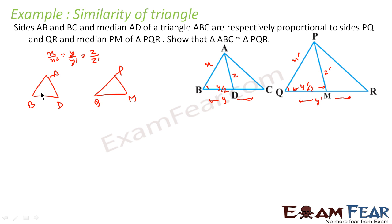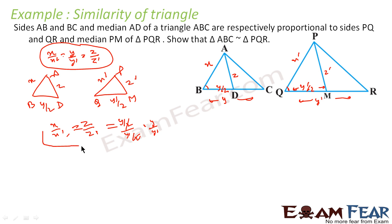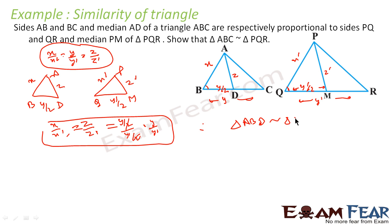In triangle ABD and triangle PQM: AB equals X, PQ equals X dash, AD equals Z, PM equals Z dash, BD equals Y/2, QM equals Y dash/2. So AB/PQ equals X/X dash, AD/PM equals Z/Z dash, and BD/QM equals (Y/2)/(Y dash/2) equals Y/Y dash. Since we are given that X/X dash equals Y/Y dash equals Z/Z dash, all three ratios are equal. Therefore, triangle ABD is similar to triangle PQM by SSS.